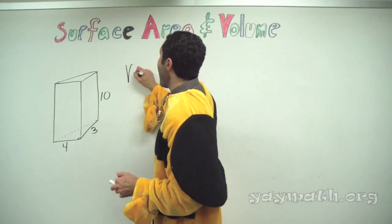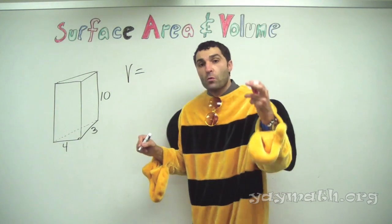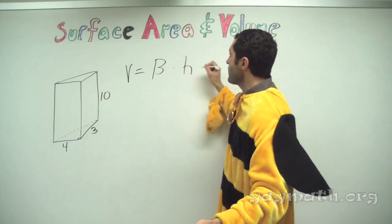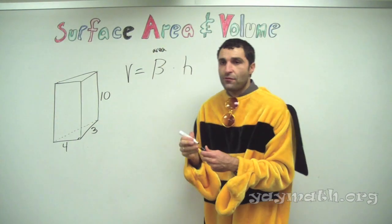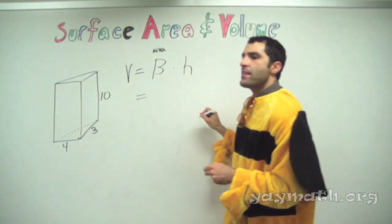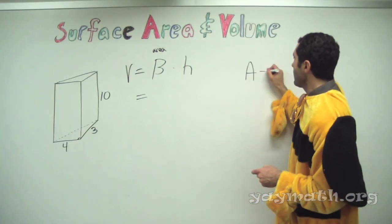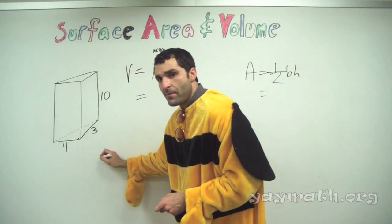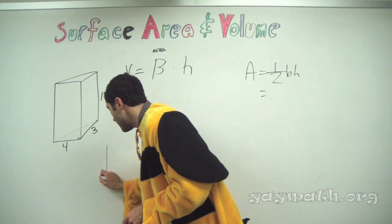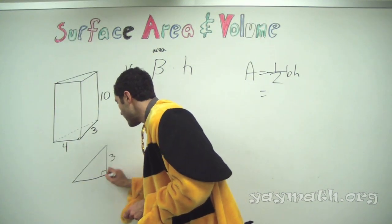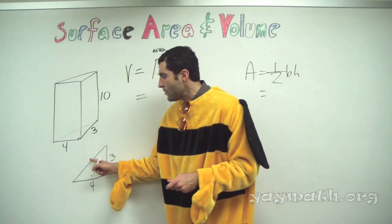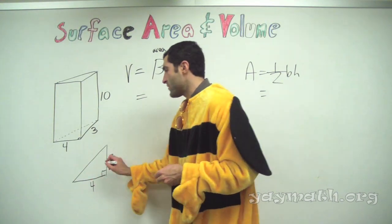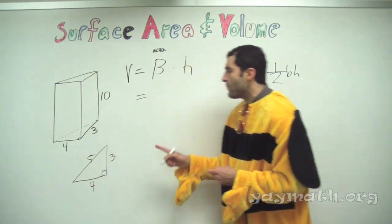Can I draw the triangle on the bottom of this base? So it's a 3-4-5 right triangle. Do we need to know the hypotenuse? We don't really need it — we already know it's a 3-4-5 right triangle using the Pythagorean theorem. What is the base of that triangle? Four. You could also say the base is three — that's interchangeable because of multiplication.